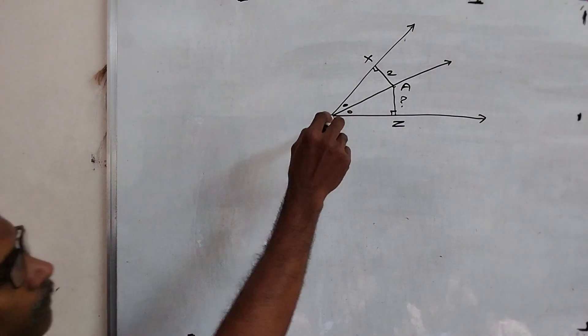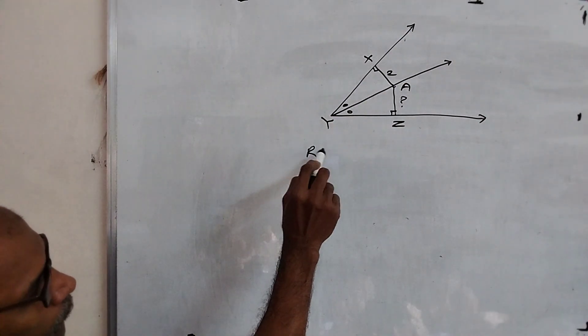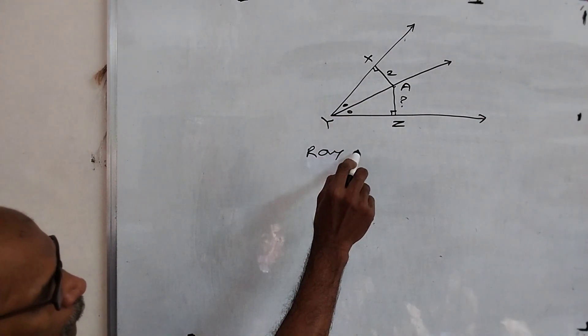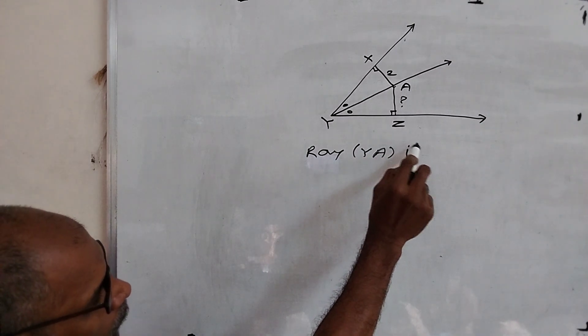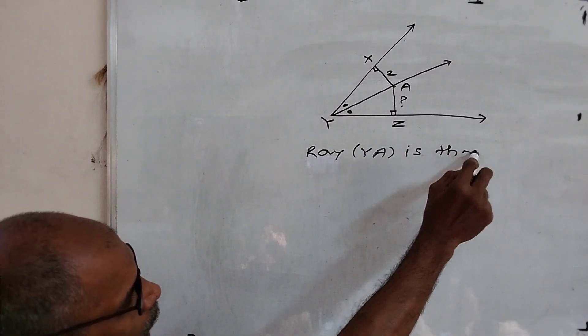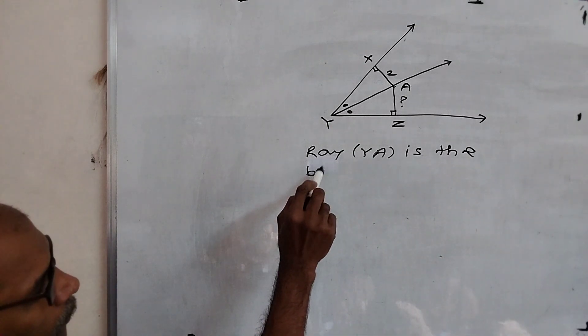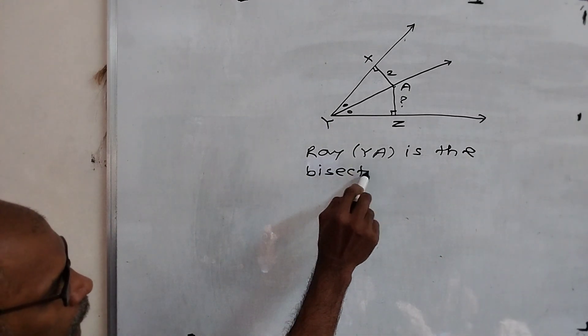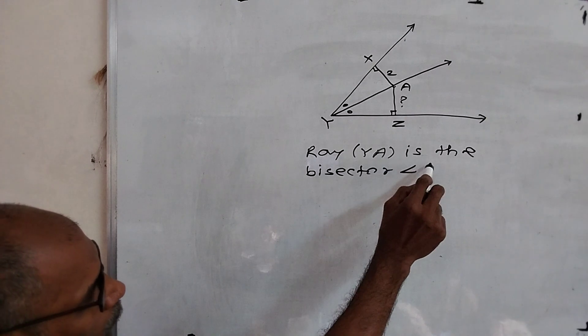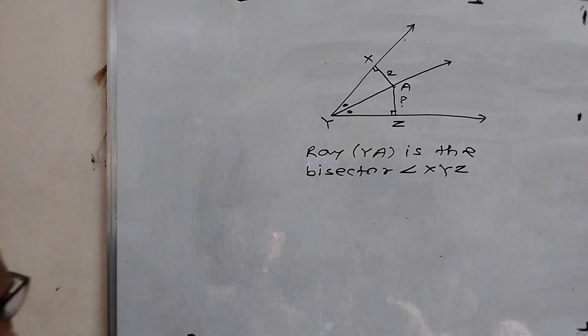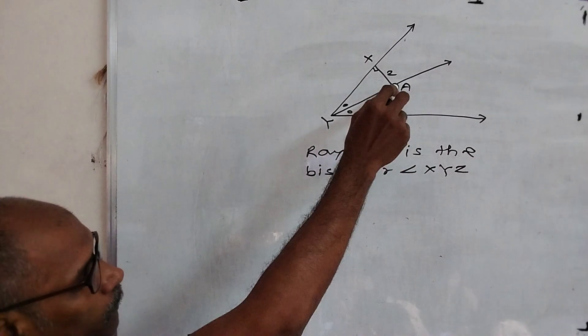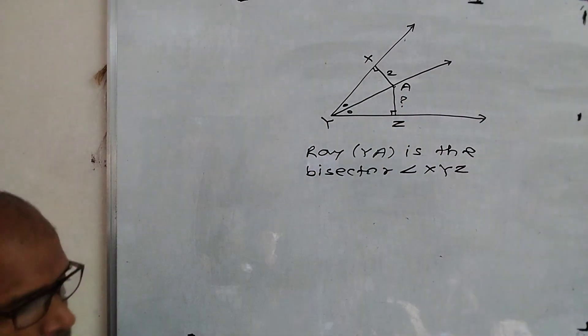Now here, this ray YA is the bisector of angle XYZ. Now point A is on the bisector.